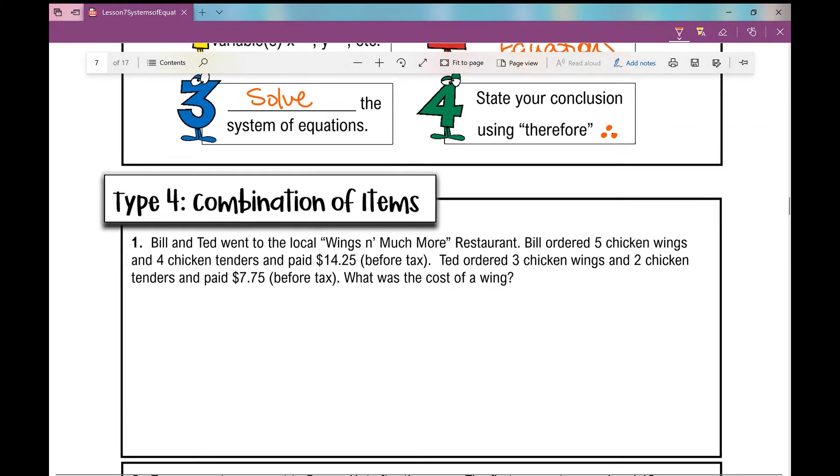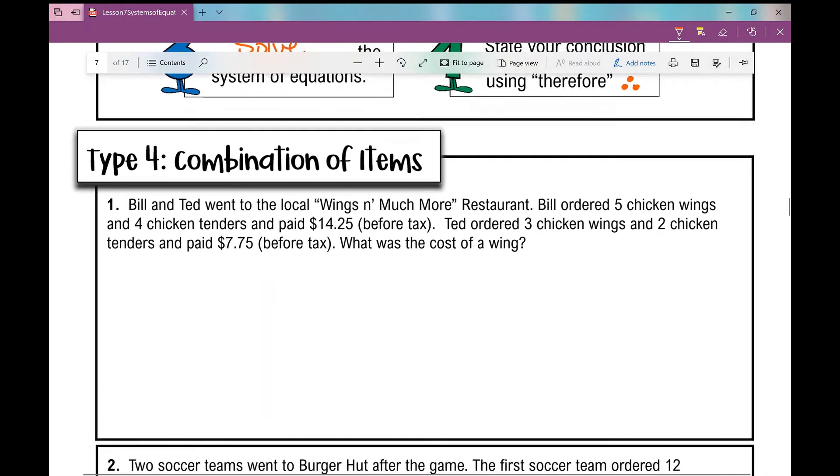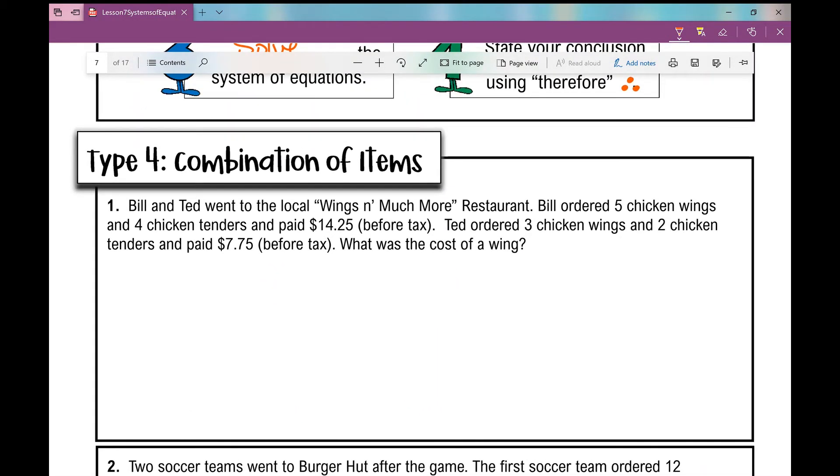So let's move on. This is a combination of items and I like to go over examples like these on a completely separate day because they are different. Bill and Ted went to the local Wings n Much More restaurant. Bill ordered 5 chicken wings and 4 chicken tenders and paid $14.25. Ted ordered 3 chicken wings and 2 chicken tenders and paid $7.75. What was the cost of a wing?